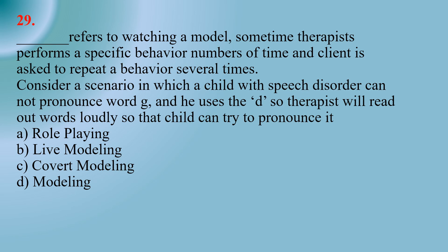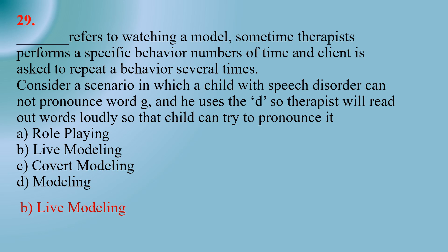Number twenty-nine: This refers to watching a model — sometimes the therapist performs a specific behavior a number of times while the client is asked to repeat the behavior several times. For example, a child with a speech disorder cannot pronounce the word 'G' and uses 'D' instead, so the therapist reads words loudly so the child can try to pronounce them — Option A: role playing; Option B: live modeling; Option C: covert modeling; Option D: modeling. The right option is B — live modeling.